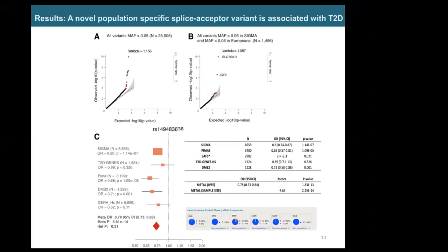An odds ratio of 0.8 means this variant is protective for Type 2 Diabetes — individuals carrying it have a 20% reduced risk. This variant is almost exclusively present in Latin Americans at a frequency of 14%, while it is nearly absent in other populations except at about 1% in some.